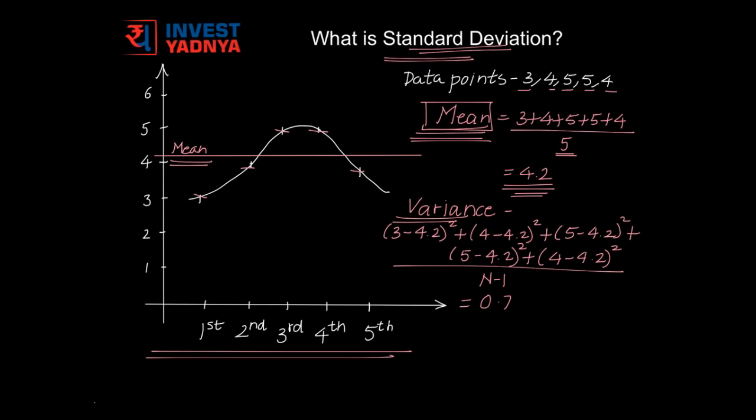This gives a value of 0.7 in this case. And further, the square root of variance gives you Standard Deviation, which works out to be 0.8367 in this case.